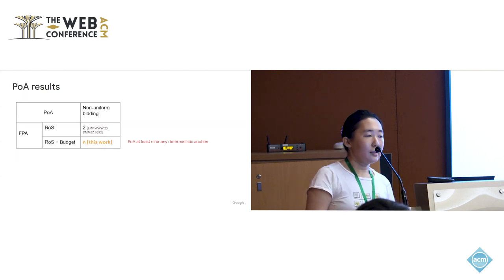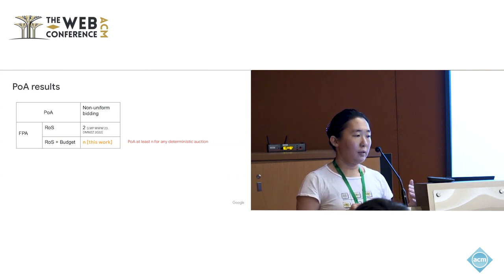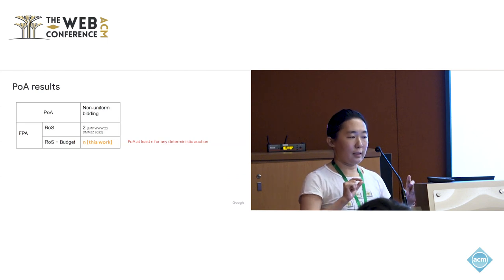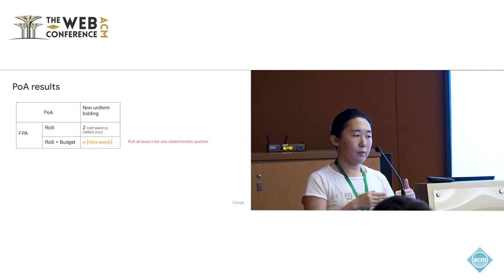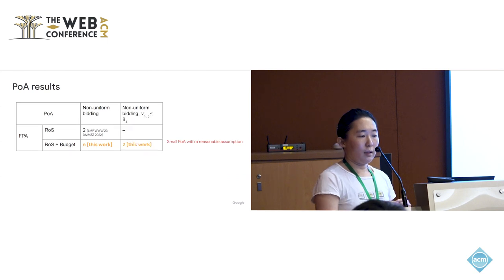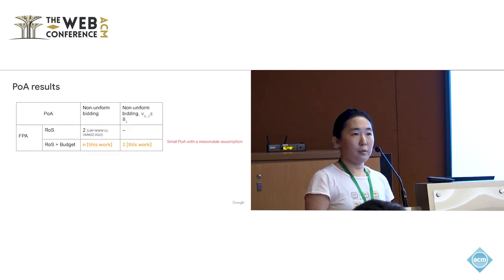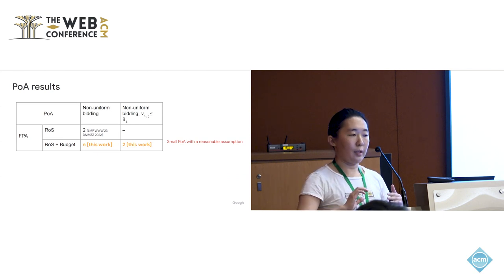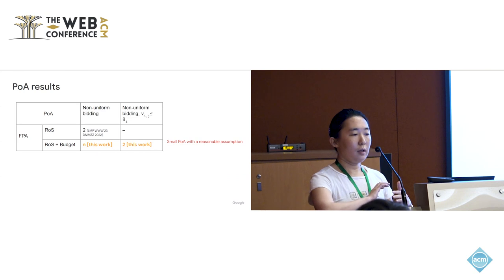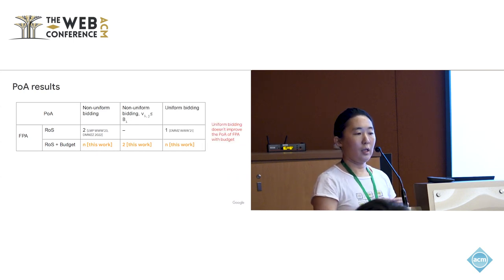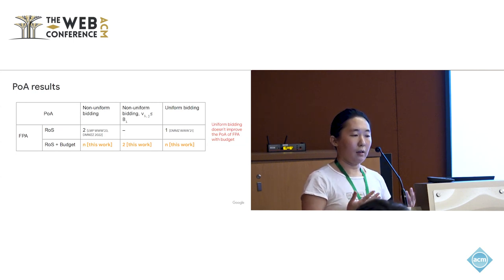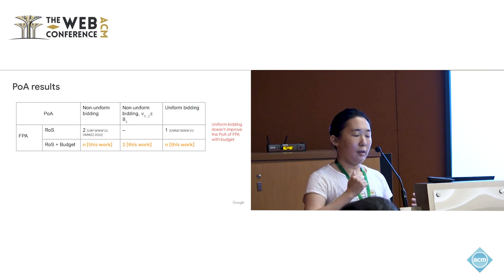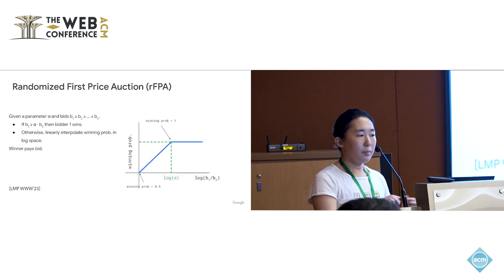Now looking at POA results: for first price auction without a budget constraint, POA equals IPOA, so two still holds. In this work we show any deterministic auction has a POA of at least n. However, under the reasonable assumption that any bidder's value for any query is no more than their total budget, we can show POA improves to two. Uniform bidding also has bad POA due to the budget constraint, since bidders can get stuck. This motivates asking whether randomized auctions can do better.